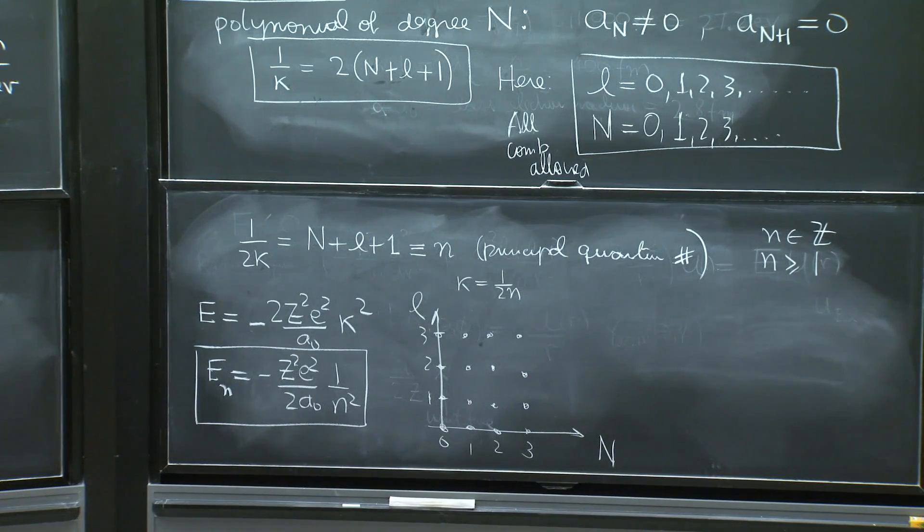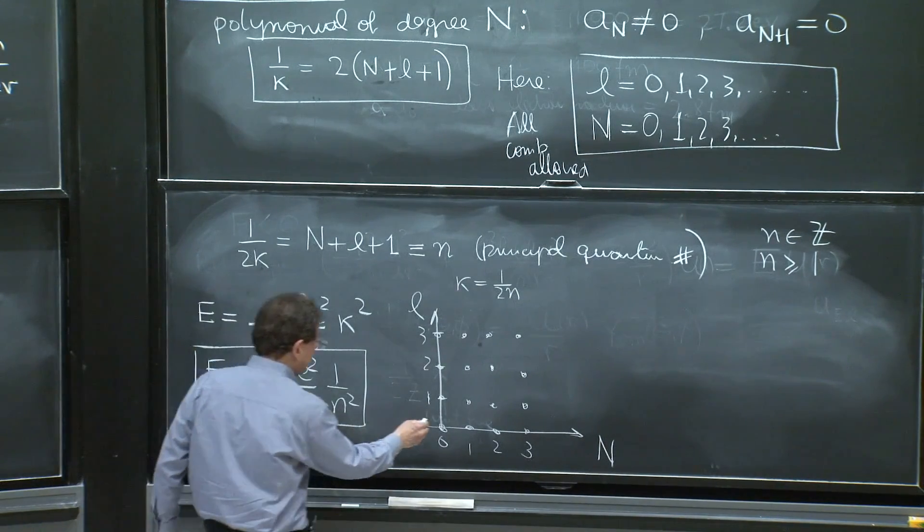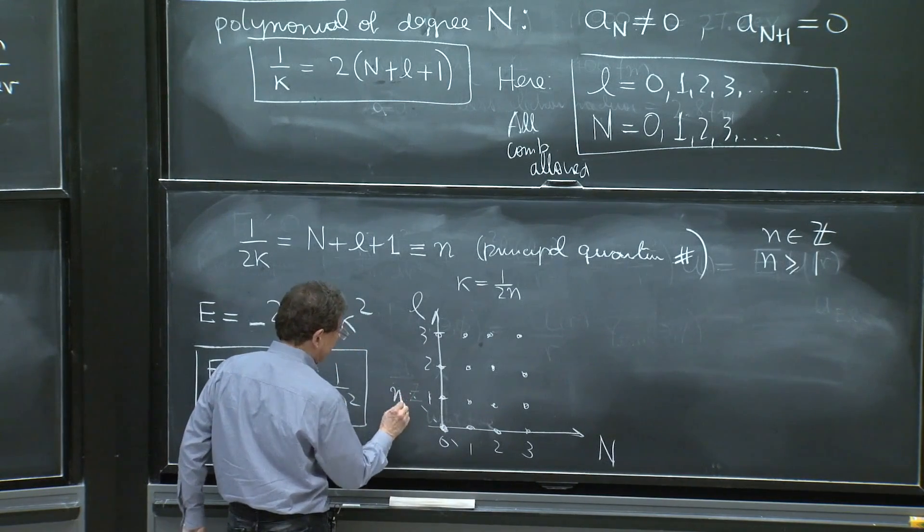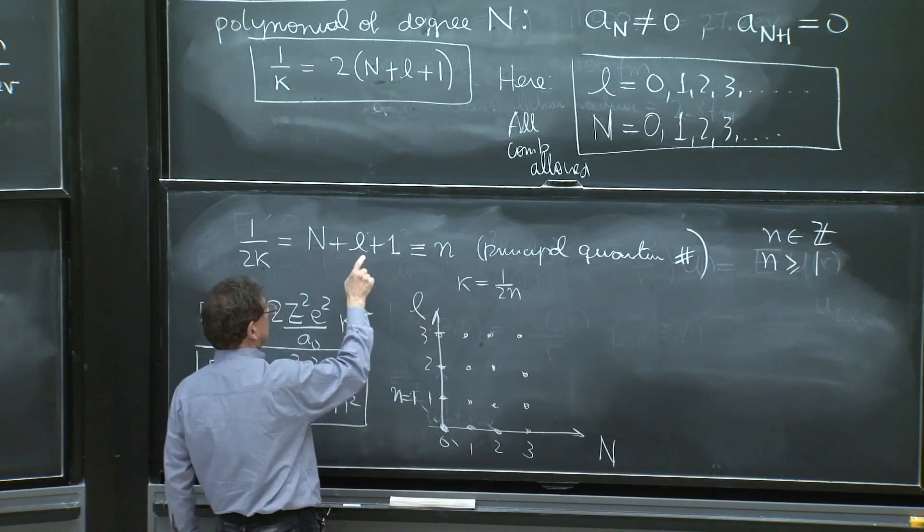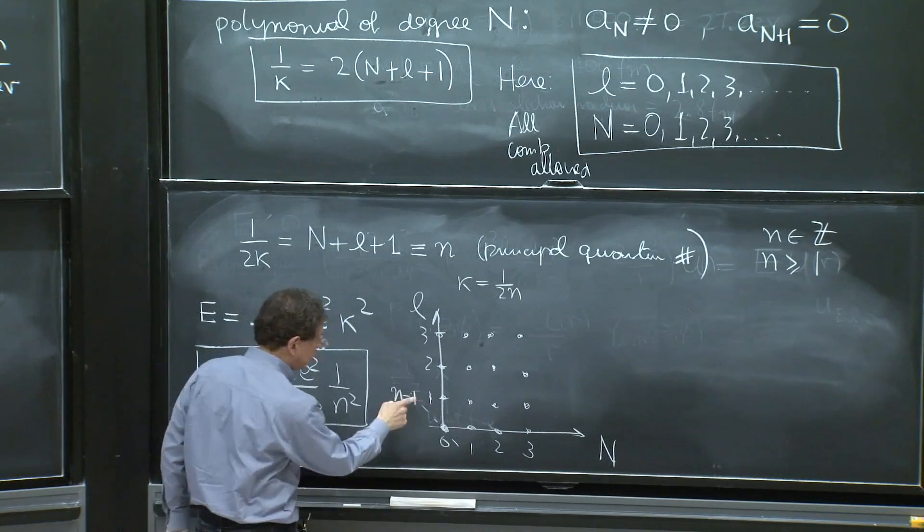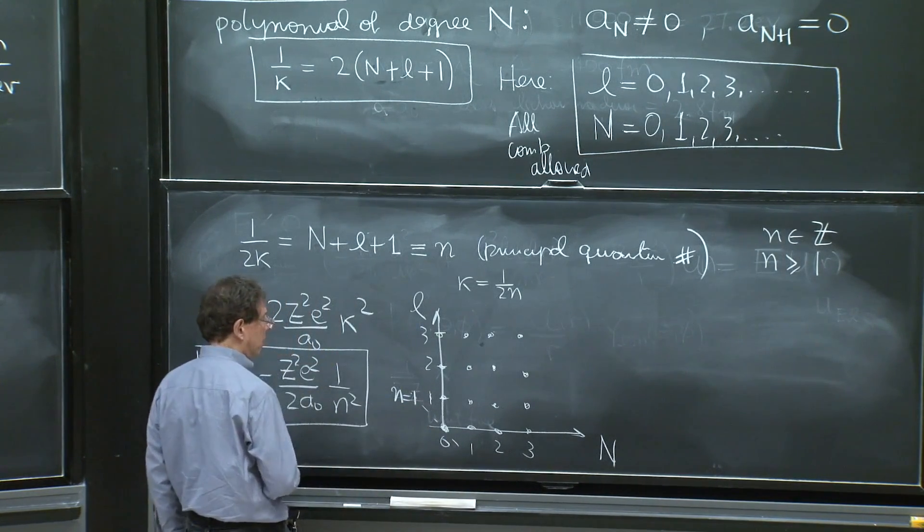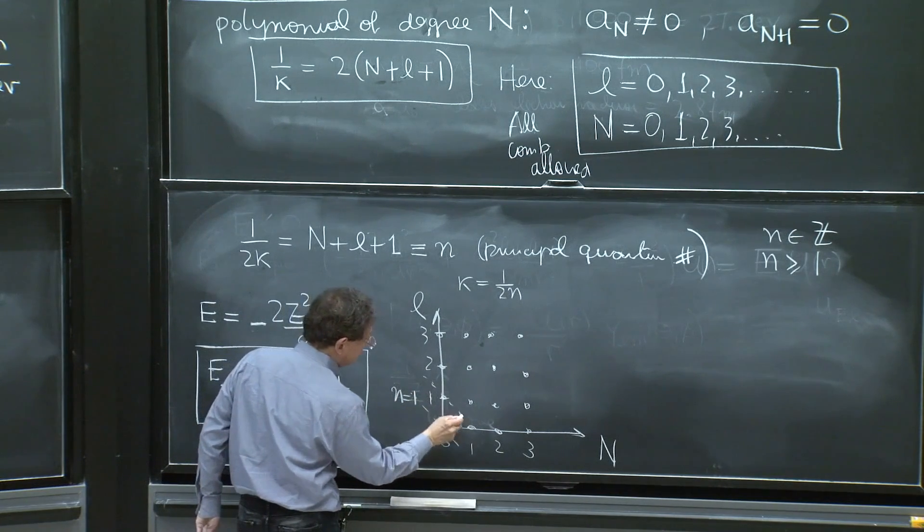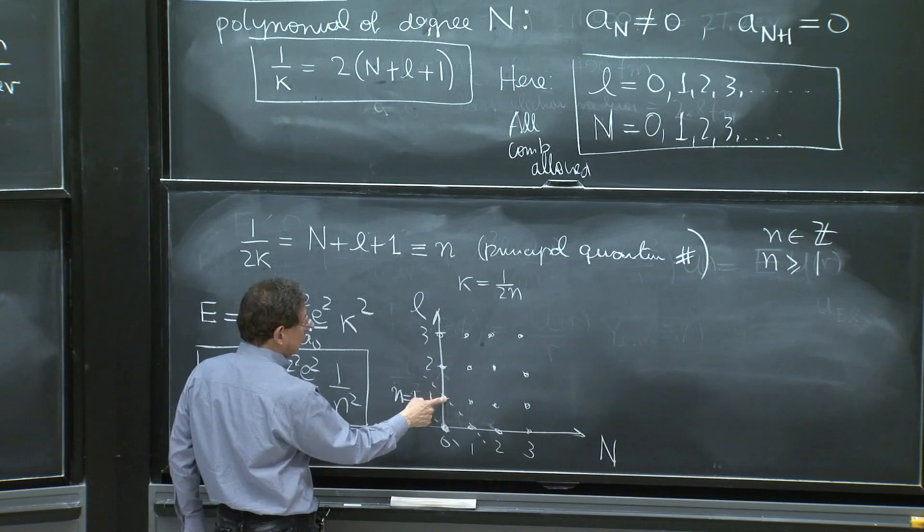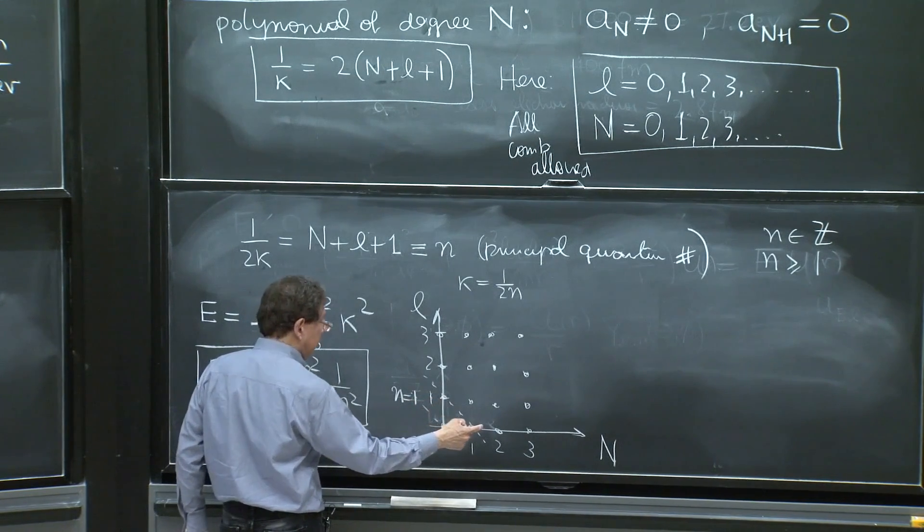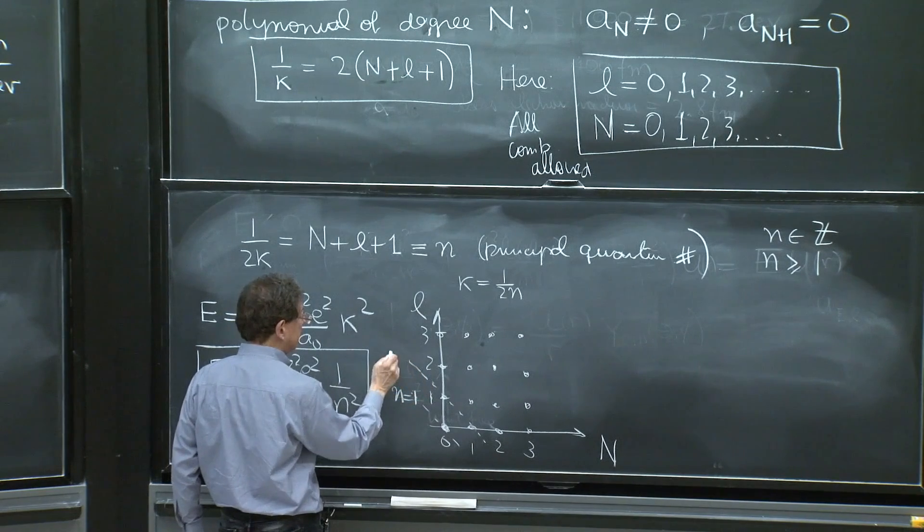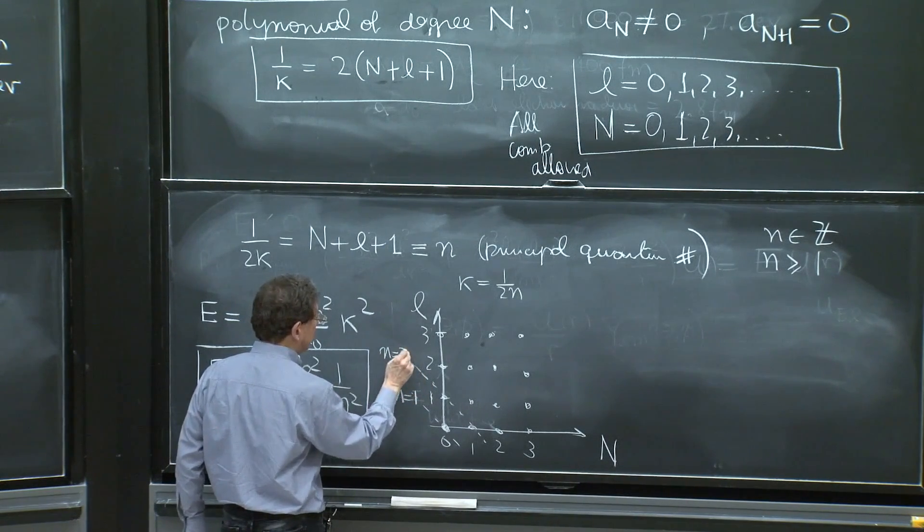But now you can see that this point, when both are 0, corresponds to n equals to 1. Because if n and l are 0, n is equal to 1. And there's just one solution with n equals to 1. These two points here, when l is equal to 1 and n equals 0, or when n is equal to 1 and l equals 0, represent the two possibilities that realize n equals to 2.